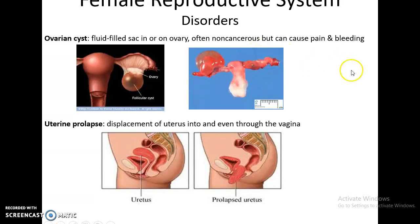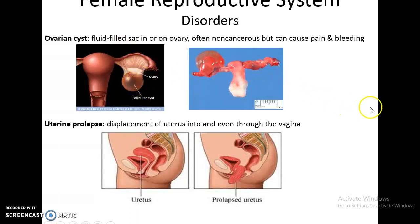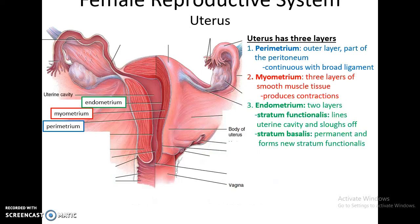Some possible issues that can develop include ovarian cysts, which are fluid-filled compartments that form on the ovary and grow larger. These are non-cancerous but can cause pain and bleeding. Uterine prolapse is another condition where the uterus pushes forward into the vaginal space and in some cases all the way out of the vagina. This is caused by a failure of the ligaments to hold the uterus in place properly.